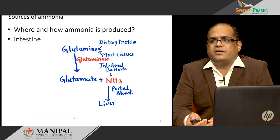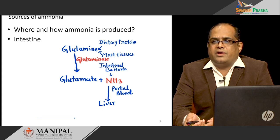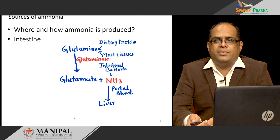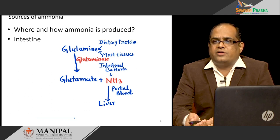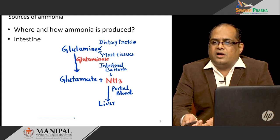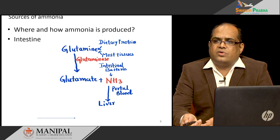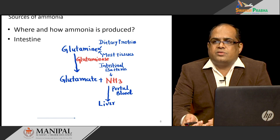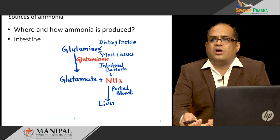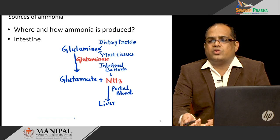In the intestine, glutamine from peripheral tissues or dietary protein is again acted upon by glutaminase, releasing ammonia and glutamate. This ammonia is taken up by the liver through the portal blood. Additionally, intestinal bacteria also produce ammonia, which is another source that passes to the liver.